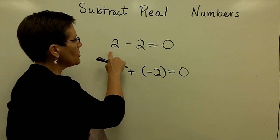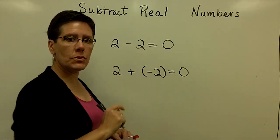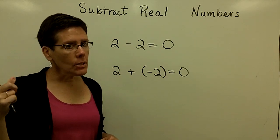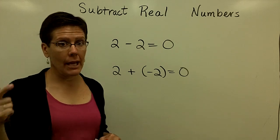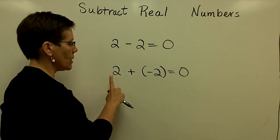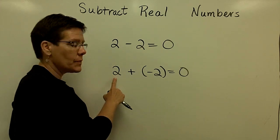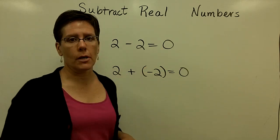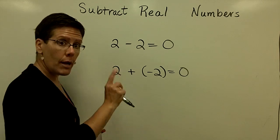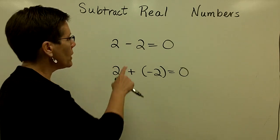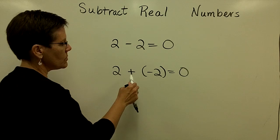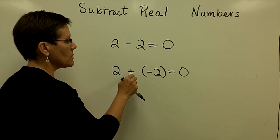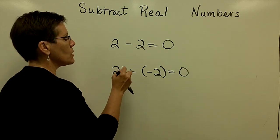We all know that 2 minus 2 is equal to 0. And with the logic and what we've been doing with adding real numbers, we also know that if we took a positive 2 and added a negative 2 to that, we'd also get 0. And this is kind of the premise of why whenever we have a subtraction problem, please notice that it's the same thing as adding the opposite values.